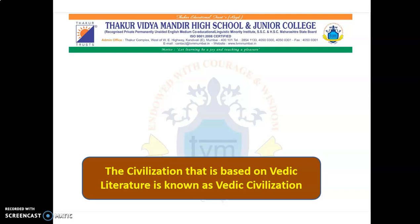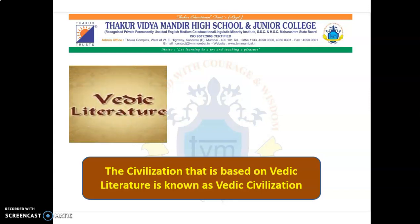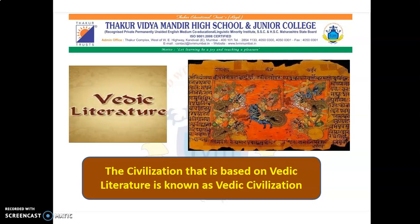The Vedas are known as the earliest literature. What exactly is literature? Literature can be any written or oral work that has a particular or specific language. It reflects human life and society. For example, literature can be poetry, novels, short stories, epics like Ramayana, Mahabharata. Here you can see in the picture the literature which is written in Sanskrit language.